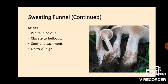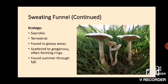The stipe is white, clavate to bulbous — you can see a couple there that have fused together at the base forming a single basal mass underground. These have a central to possibly eccentric attachment to the cap, and the stipe is up to about two inches high — not the largest mushroom. These are saprobic and terrestrial, found in grassy areas. They are scattered to gregarious, sometimes clumping together, and often form fairy rings. These are found summer through fall.